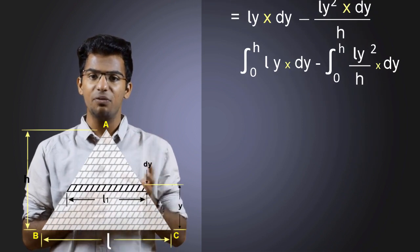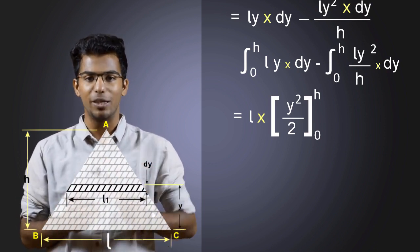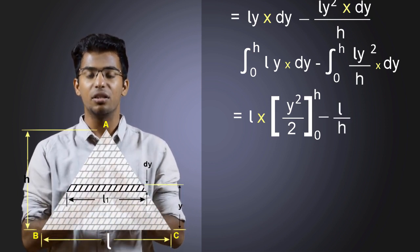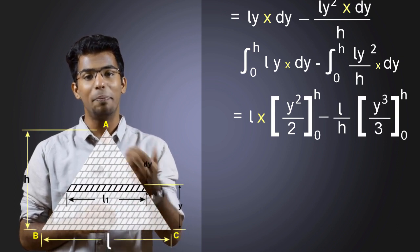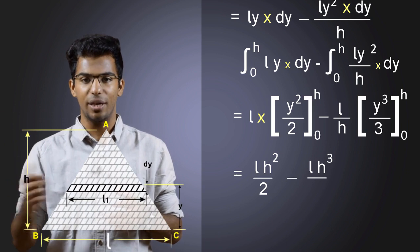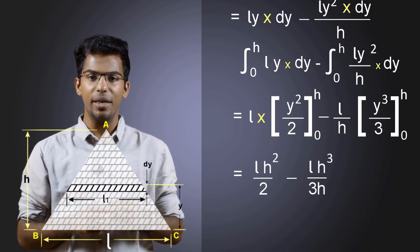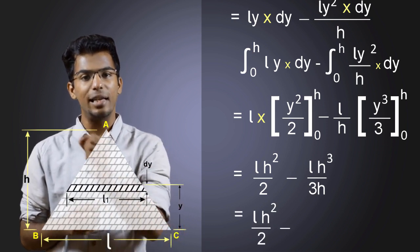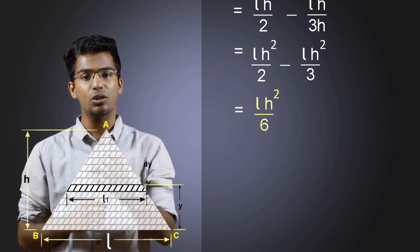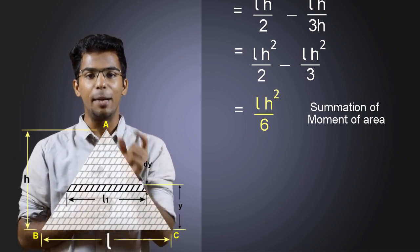On integration, the first term will be L times Y squared divided by 2, evaluated under the limits 0 to H, because the integral of Y is Y squared by 2. The second term after integration will be L divided by H — since they are constants, the values don't change — and Y squared becomes Y cubed by 3. On simplifying, we get LH squared divided by 2 minus LH cubed divided by 3H. Cancelling H in the second term gives LH squared by 2 minus LH squared by 3. Taking LCM and simplifying, the total moment of area is LH squared divided by 6. This is the summation of moment of elemental areas and part one of our derivation.